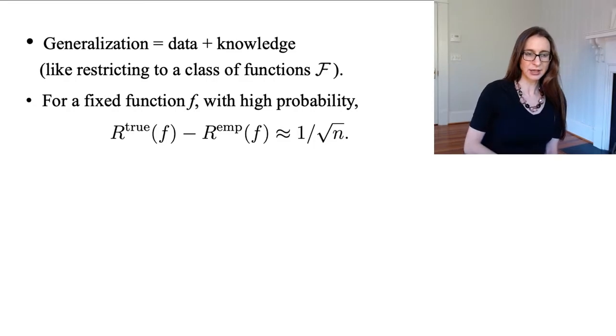And then we learned that for a fixed function f with high probability, the true and empirical risks are kind of on the order of 1 over root n, get that from Hoeffding's inequality.